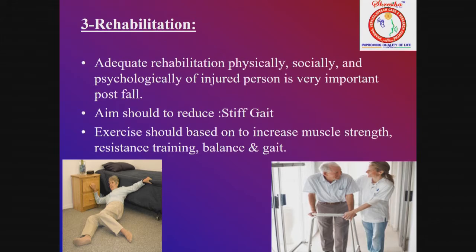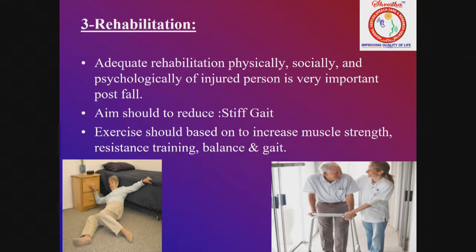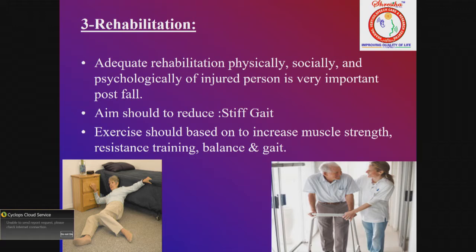Once everything is analyzed and prevention done, if the patient is motivated, start rehabilitation according to their muscle strength, mental conditions, and availability. Adequate rehabilitation physically, socially, and psychologically of the injured person is very important post-fall. The aim should be to reduce stiff gait — many persons after falling tend to stiffen their neck and walk cautiously. Use compensatory strategies and relaxation of muscles. Exercise should focus on increasing muscle strength, resistance training, balance, and gait.